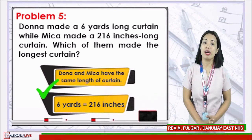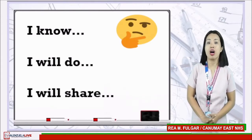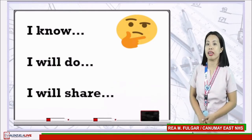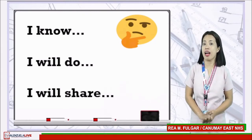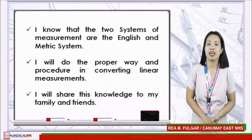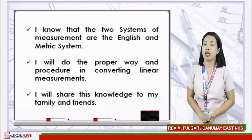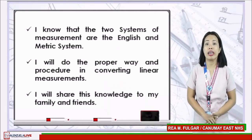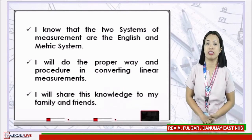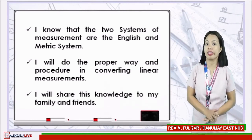To sum up our lesson, please complete these 3 important lines: I know, I will do, I will share. Write your answer in your module or activity notebook and submit it to your subject teacher. I know that the two systems of measurement are the English and metric system. I will do the proper way and procedure in converting linear measurement. And I will share this knowledge to my family and friends. If you have any questions or clarifications, just ask your subject teacher — they love to answer all your questions.